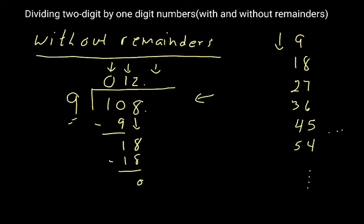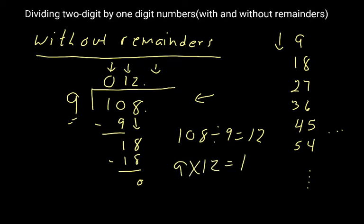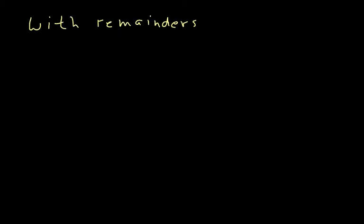We subtract that out, which leaves us with zero. So that means that 108 divided by nine equals 12. And of course, you should always check your work. You could do it with multiplication — you can go nine times 12 and work that out, and you would find that it's 108. If you know your times tables really well, you would immediately know that that is correct, but you should always still check your work.